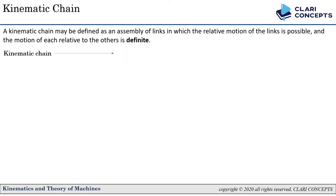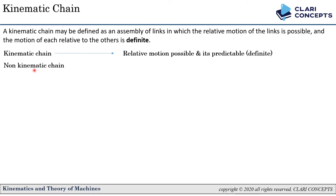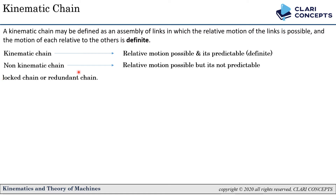We classify chains into three types. In a kinematic chain, relative motion is possible and it's predictable — that means it's definite. In a non-kinematic chain, relative motion is possible but it is not predictable — that means it is indefinite. And finally, in a locked chain or redundant chain, relative motion is not at all possible.